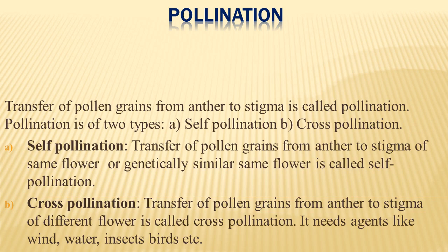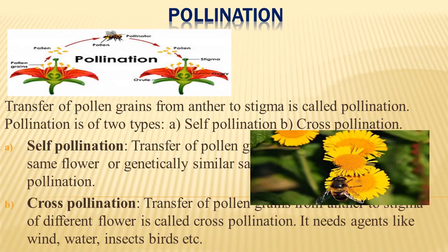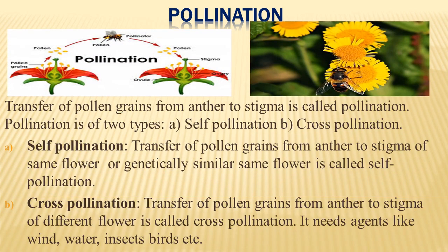Self-pollination creates very little variation, whereas cross-pollination creates more variation, which leads to the evolution of different varieties of plants in nature. In the image you can see pollination taking place either in the same flower or in a different flower.